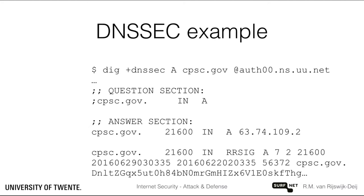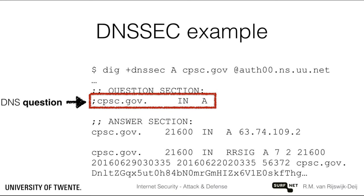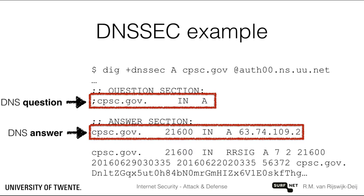This is an example of the use of DNSSEC. On the slide you see DNS information for the cpsc.gov domain. The slide shows you the question — in this case we are asking for the IPv4 address of cpsc.gov — it shows you the answer to that question, in this case the IPv4 address we asked for, and it shows you the digital signature over the answer.